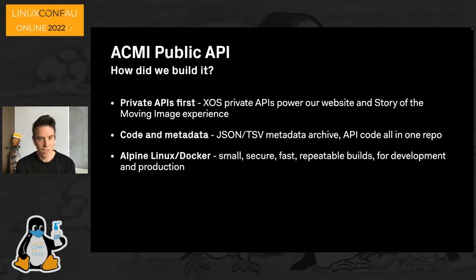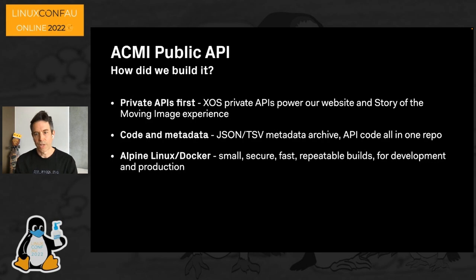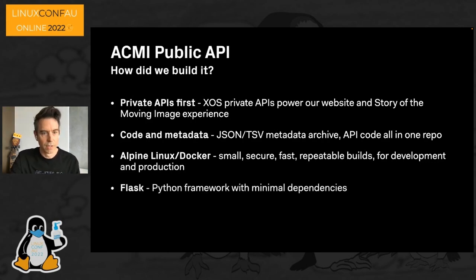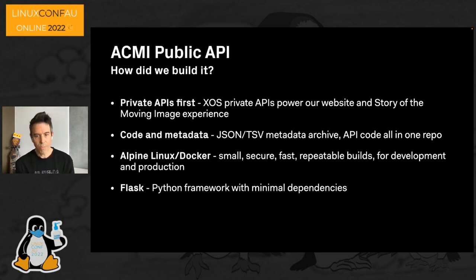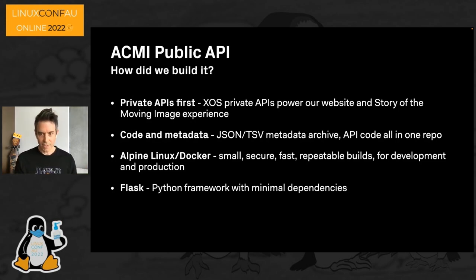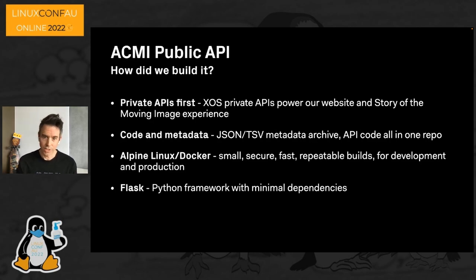We used an Alpine Linux Docker container — the main reasons being it's small, secure, and fast. We can do repeatable builds and use the same image for development and production. The majority of our code at ACMI is written in Python, so the dream result was a Python-based framework with minimal dependencies that was quick and easy to prototype and develop, and Flask was a really good choice for that.